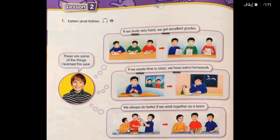Sentence three: We always do better if we work together as a team. 'Do' and 'work' — present simple with 'we,' not 'he' or 'she.' What happens if you work together as a team? We always do better.